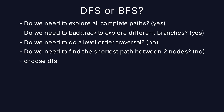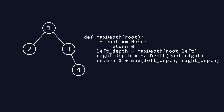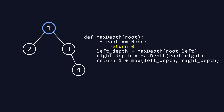Now that we have decided to use DFS, let's write the function for it. Here is our maxDepth function. We start by defining a function named maxDepth that takes one parameter, root, which represents the root node of a binary tree. The first line inside the function checks if the root is None. If the root is None, it means the tree is empty, so the function returns zero. This is the base case for our recursive function — if we reach a leaf node's child, which is None, we return zero, because the depth of an empty tree is zero.